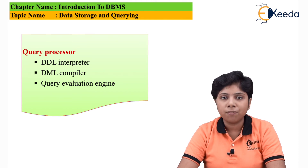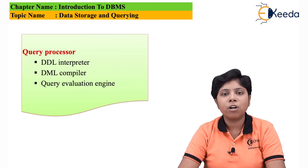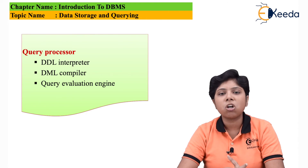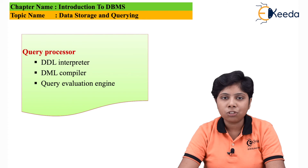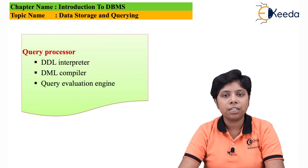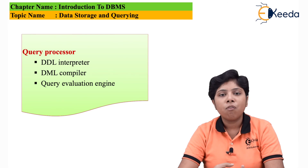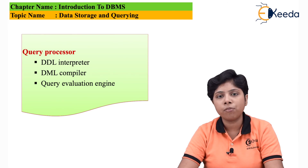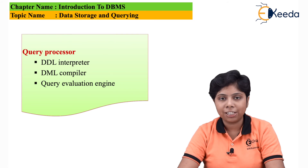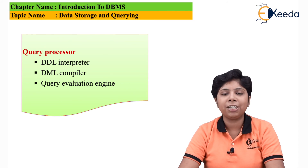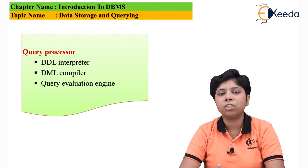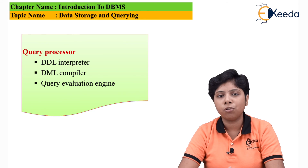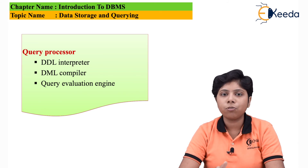There are three types of query processors. The first is the DDL interpreter, which interprets all the DDL statements used to update or operate on a particular schema. Next is the DML compiler, which converts the query from a high-level form to the query evaluation language level. Finally, the query evaluation engine executes the data and produces the actual desired output for the particular query. This is how data storage and querying are handled in a database system.